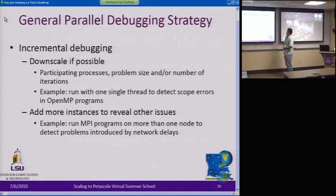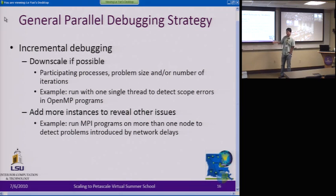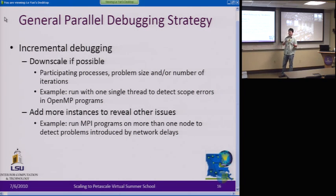With say 16 processes — and the extreme example is if you can run it with one process or one thread, you can do that. So for example, if you know OpenMP, if you have indeterminism — the result changes every time — it could be a race condition, or it could be the variable scope problem, the improper usage of shared or private variables.